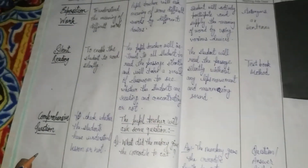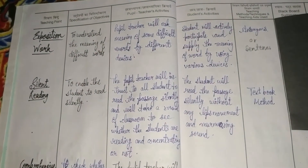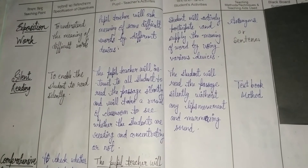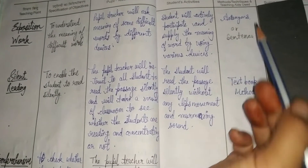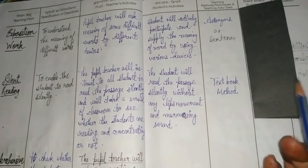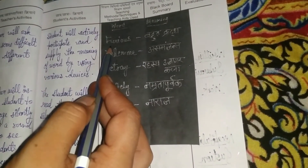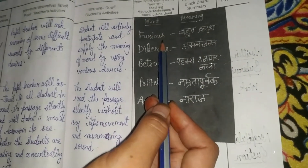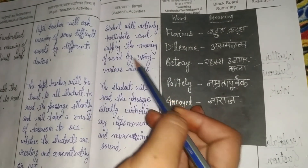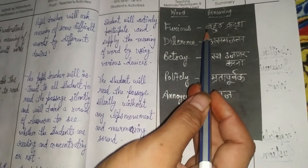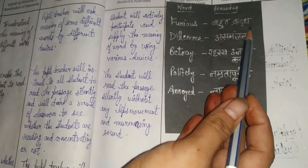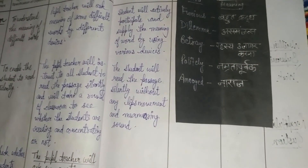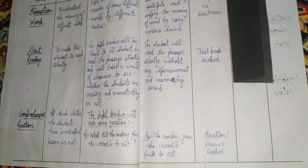After that comes exposition work. In exposition work, you will write words and explain their meanings to the students using different devices. For example, you can use antonyms or sentence-based explanations. For instance, if you write the word 'furious,' you will write its meaning. Using the antonym device or a sentence — for example, using the word in a sentence — students will understand that 'furious' means very angry. Similarly, 'dilemma' means confusion. Students will also be asked to use the word in a sentence.